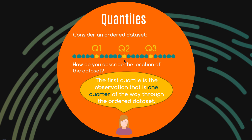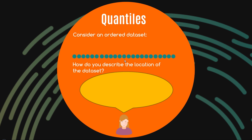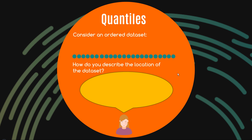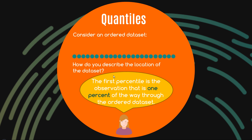What's a decile? If quartiles split the data set into quarters, deciles split the data set into tenths — 'dec' being that Latin prefix meaning a tenth. So the first decile is one tenth of the way into the data set, the second decile is two tenths of the way through, all the way up to the tenth decile which would be the maximum. You could also have a zero decile which would be the minimum.